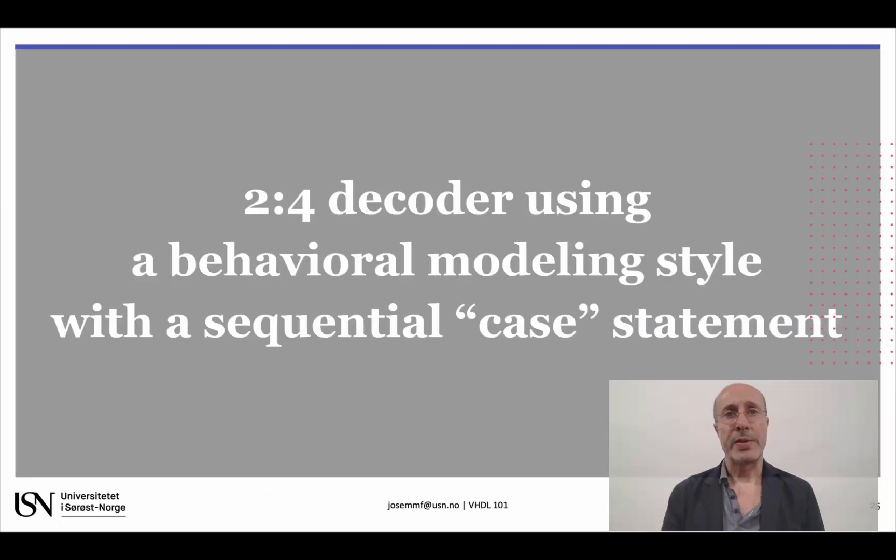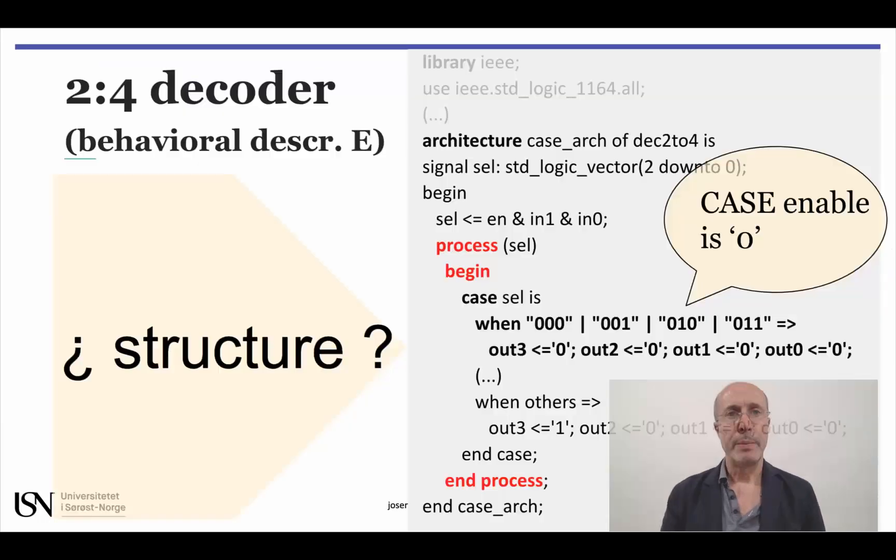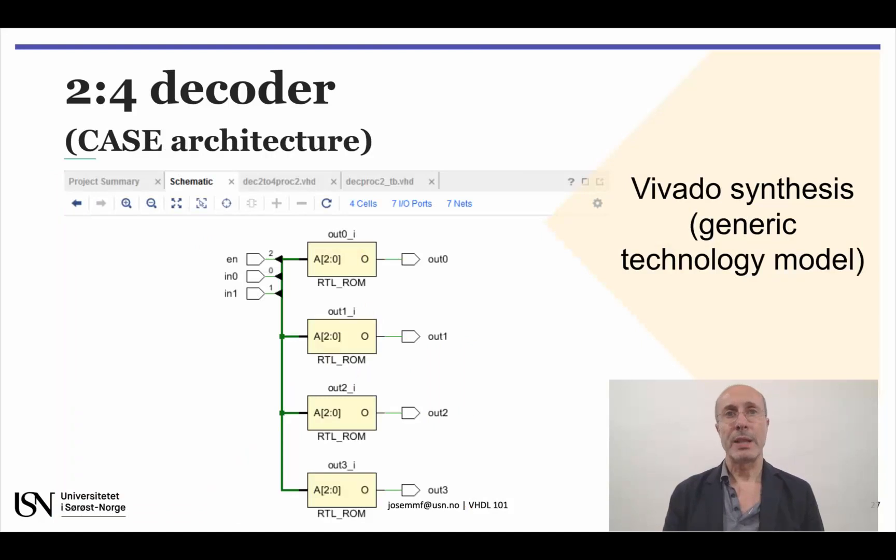The last sequential statement considered was the case statement. You may still recall how we used a case statement to model the decoder. This modeling style leads to the same generic technology model as the concurrent with select statement model, and consequently the same cost estimation, which also happens to be the lowest. We shouldn't be surprised due to the similarity of the concurrent with select and the sequential case statements.